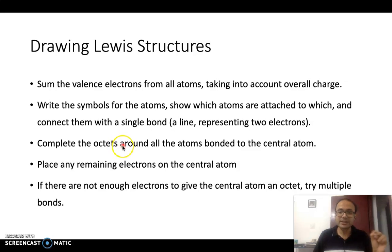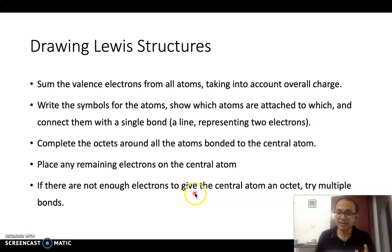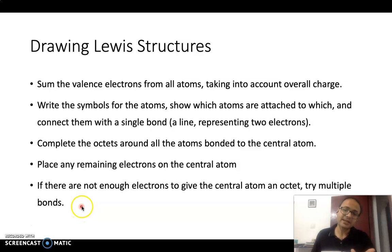Third, complete the octet by arranging the remaining valence electrons around atoms other than the central atom. Fourth, place any remaining electrons on the central atom, even if it exceeds the octet. Fifth, if the central atom still does not have a complete octet, form multiple bonds by moving non-bonded electrons from outer atoms into bonding positions, leading to double or triple bonds.